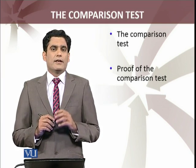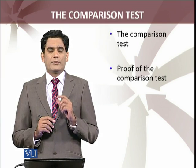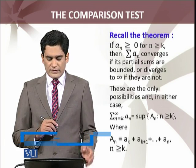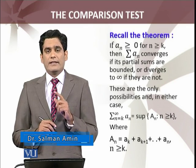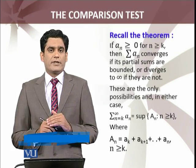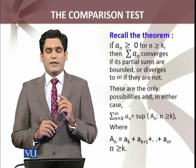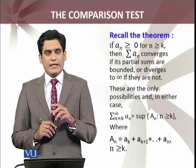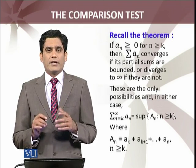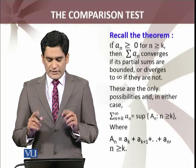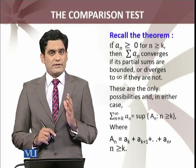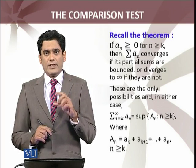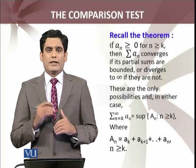Before going to the proof and statement of the comparison test, I am going to recall the theorem which we have just stated and proved for the series of non-negative terms, which states that if a_n is greater than or equals to 0 for n greater than or equals to k, then that series of non-negative terms converges if its partial sum is bounded. Partial sum agar bounded hoga to woh converge karegi finite sum ko.